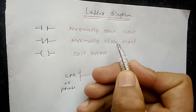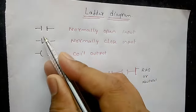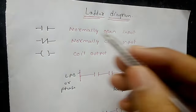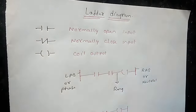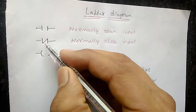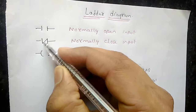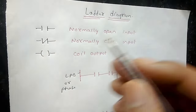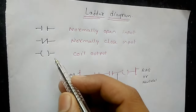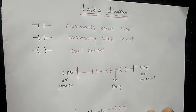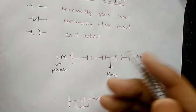This is called a normally open input. If you see this symbol in a ladder diagram, you can assume that this is normally open. And this is called normally closed — it is called normally closed because this is closed. These two are inputs, and this is the coil output.